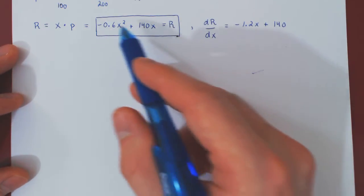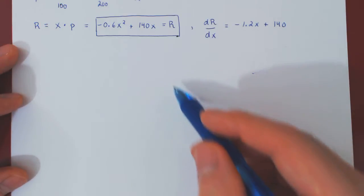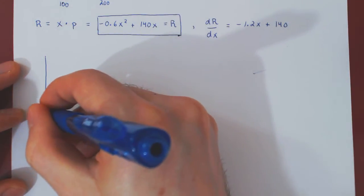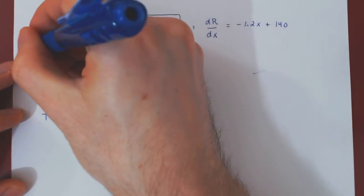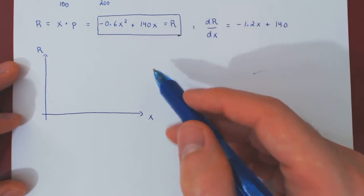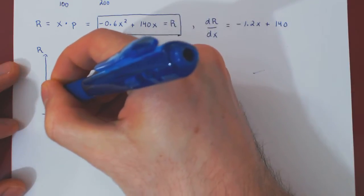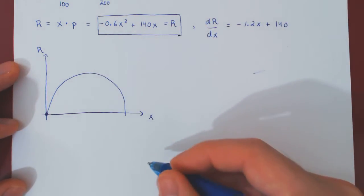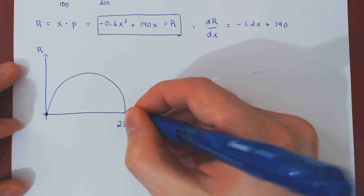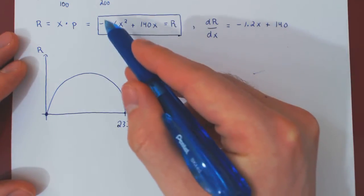The revenue function is an inverted quadratic polynomial — simply a parabola facing downwards. Factoring x, one zero is at 0, and solving for the other zero gives approximately 233.3 repeating. So here is the rough sketch of our revenue function: a parabola facing downwards.